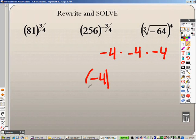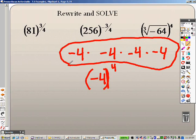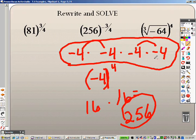So really what this problem is saying is, what is negative 4 to the 4th power? So what is negative 4 times negative 4 times negative 4 times negative 4? That's what it's asking. Well, negative 4 times negative 4 is 16. So that means that's also 16. So really this is 16 times 16, which is 256. So your answer is 256 for that problem.